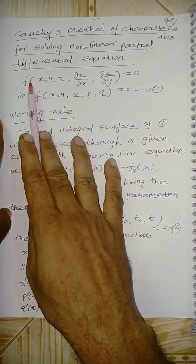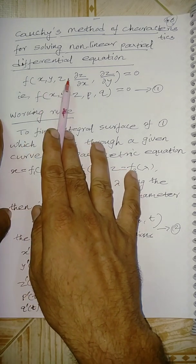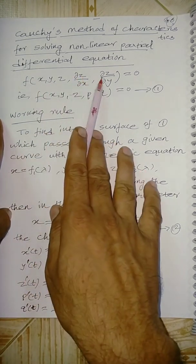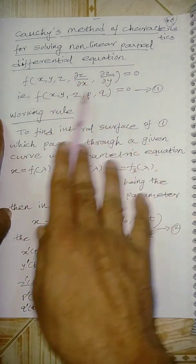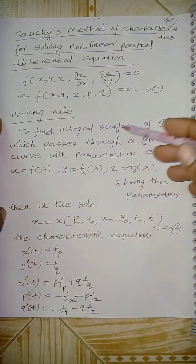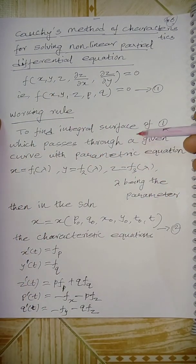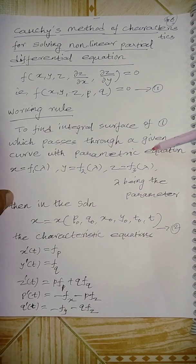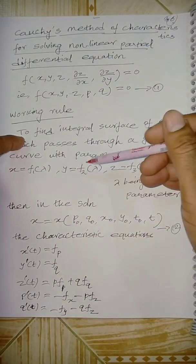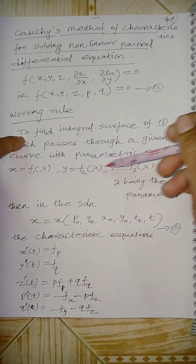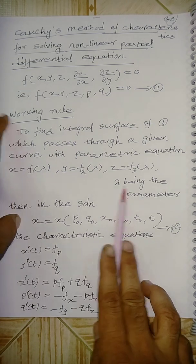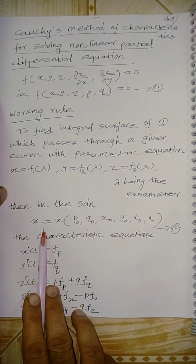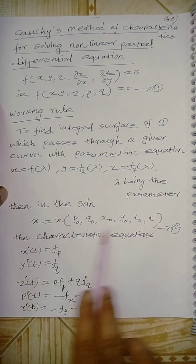The general form is f of x, y, z, p, q equal to 0. In the working rule, the parameter lambda is introduced. That is, x equals f1(lambda), y equals f2(lambda), z equals f3(lambda), where lambda is the parameter.